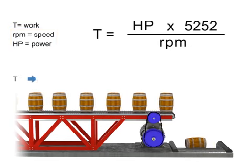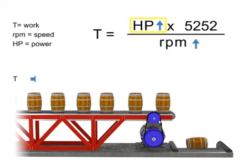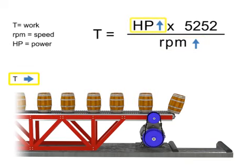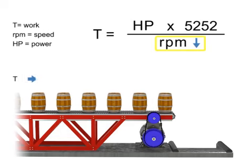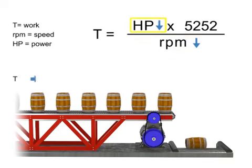As the speed, or RPM, increases, horsepower increases to maintain constant torque. If speed decreases, horsepower decreases to maintain constant torque.